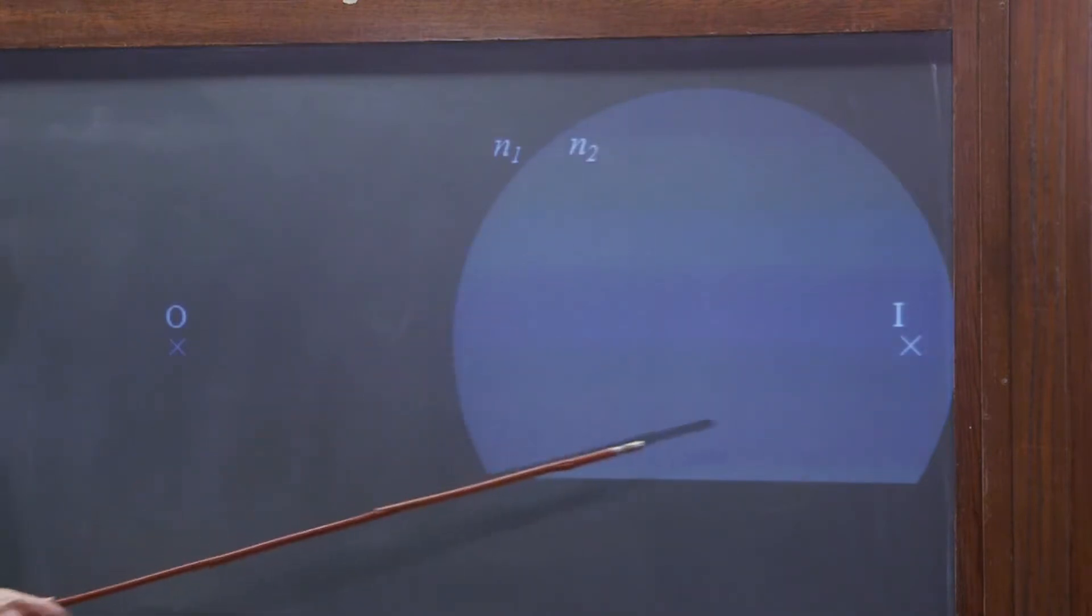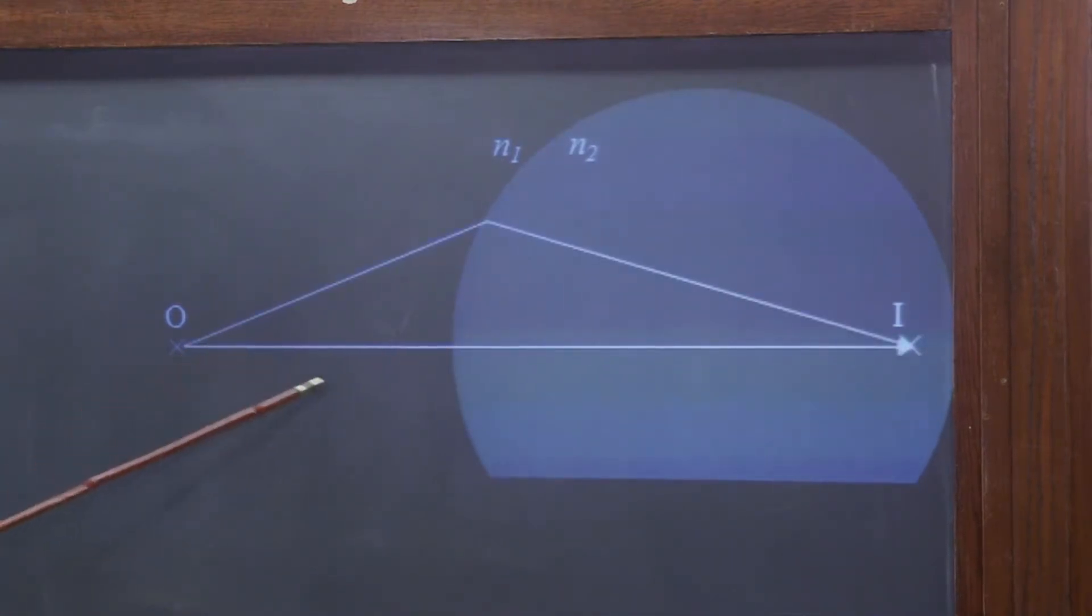So the way we work out where the light is going to focus is we imagine two rays. One is going straight from O to I. That's pretty much the optical axis. And then another one comes up at some angle and refracts at the angled surface of the sphere up there, and then it goes back in, and it also reaches I isochronously.